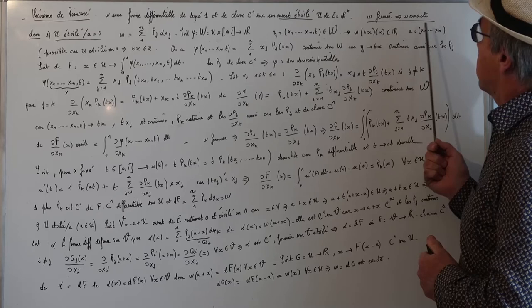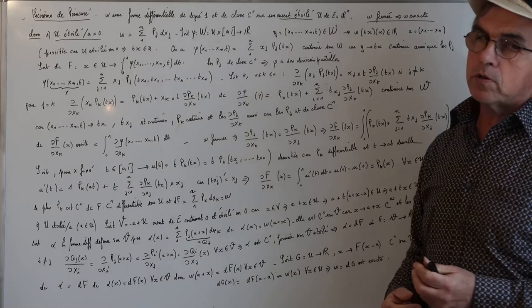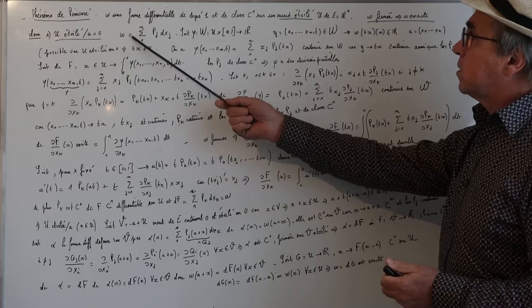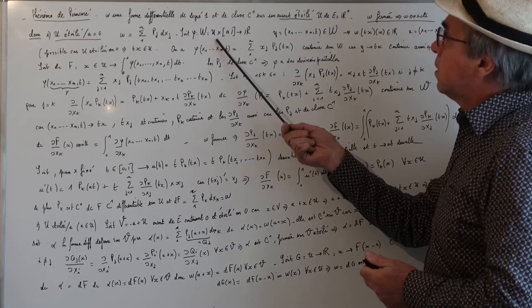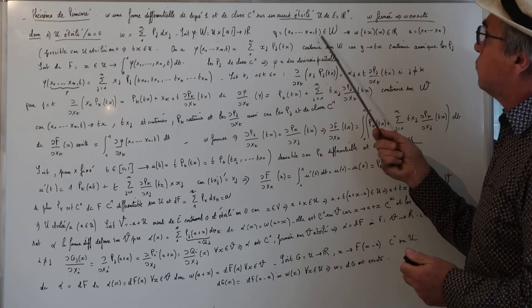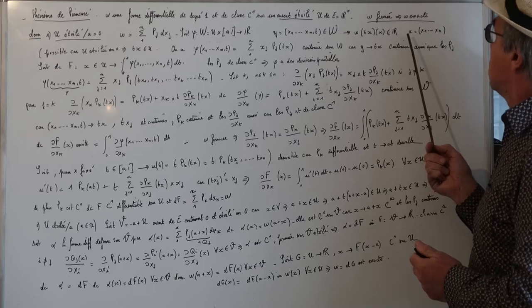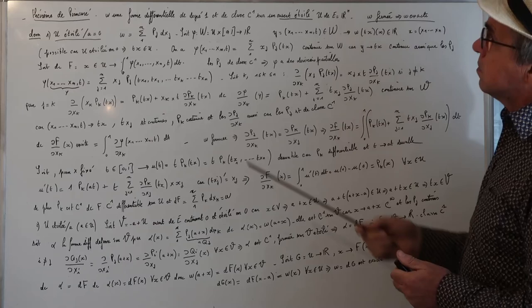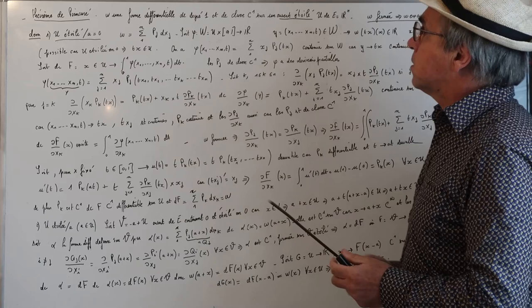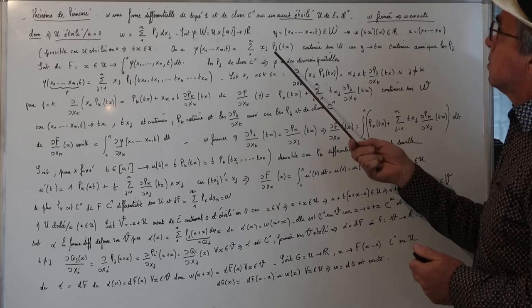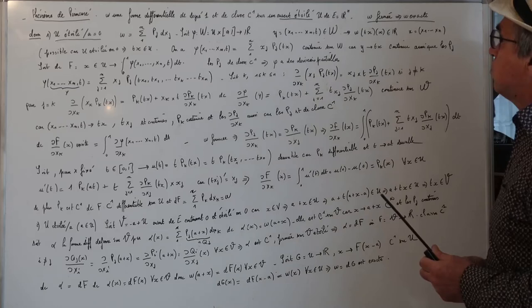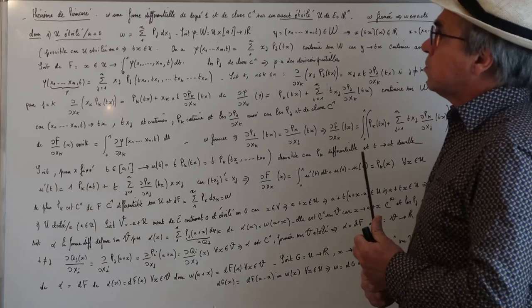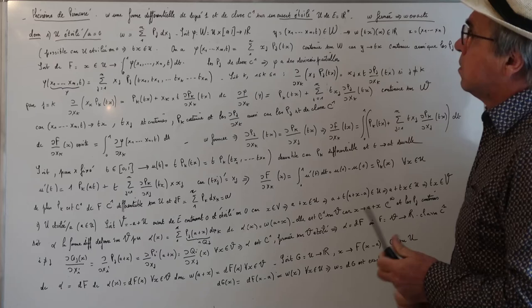Démonstration : U est étoilé. On se place d'abord dans le cas où U est étoilé par rapport à a = 0, donc 0 appartient à U. On construit φ de W = U × [0,1] vers R, qui à y = (x₁,...,xₙ, t) associe ω(tx)(x) ∈ R, ce qui est possible car U est étoilé en 0. On a donc φ(y) = Σⱼ xⱼ Pⱼ(tx). φ est continue sur W car y → tx est continue, ainsi que les Pⱼ. On définit f : x ∈ U → ∫₀¹ φ(x, t) dt.